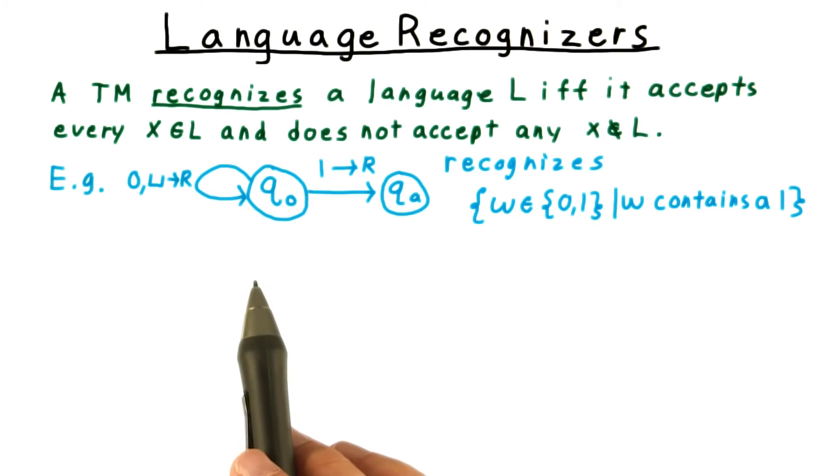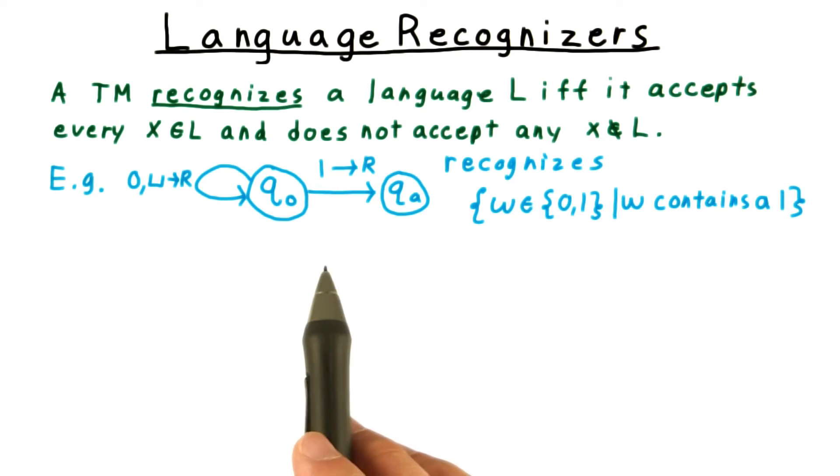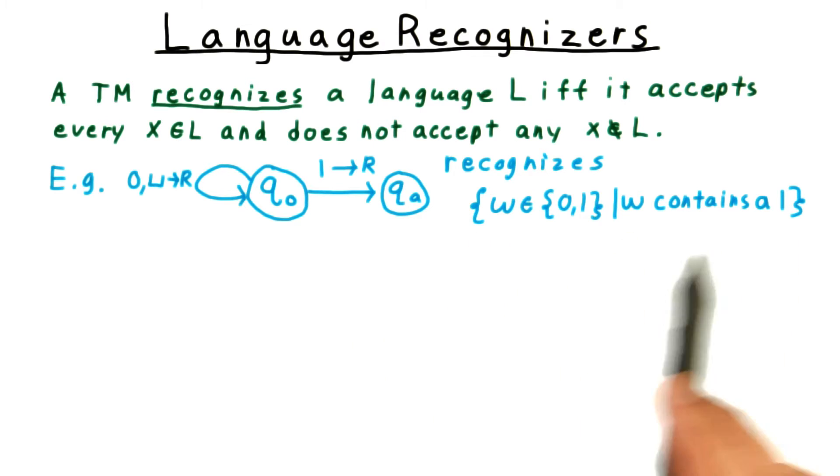Thus, we can say that the Turing machine from the quiz does indeed recognize the language consisting of strings that contain a one. It accepts those containing a one, and it doesn't accept the others. Instead, it loops on them.